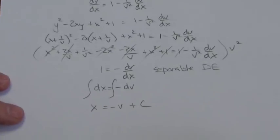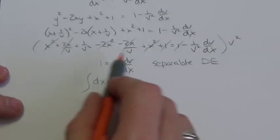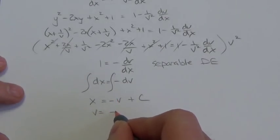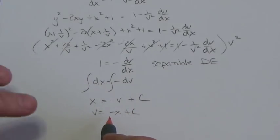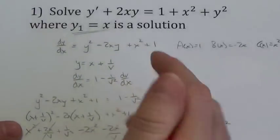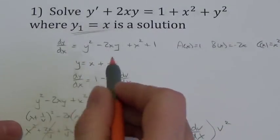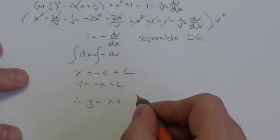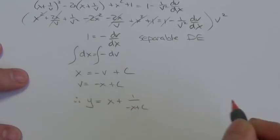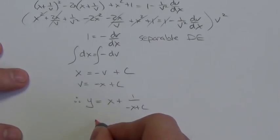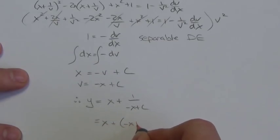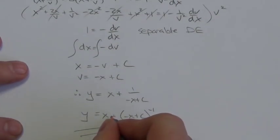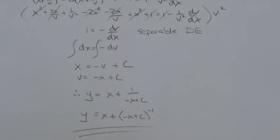Solving for v gives v = −x + C. Substituting back into y = x + 1/v, the general solution is y = x + 1/(−x + C), or equivalently y = x + (−x + C)^(−1). That is the solution to this Riccati equation.